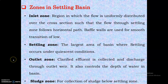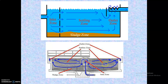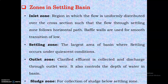In this picture you can see a rectangular tank which is totally divided into four parts: inlet zone, settling zone, outlet zone, and at the bottom the sludge zone. The inlet zone is a region in which flow is uniformly distributed over the cross-section. The flow through the settling zone comes from the inlet.